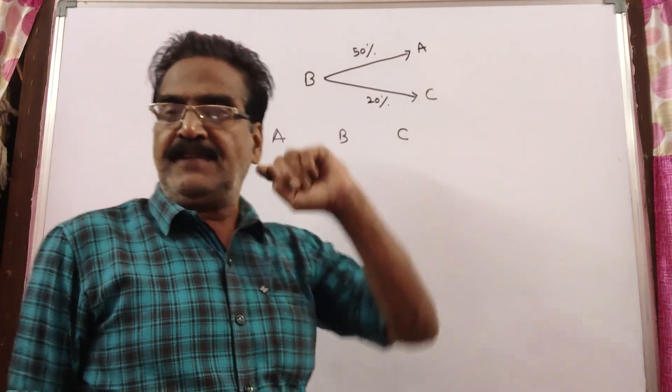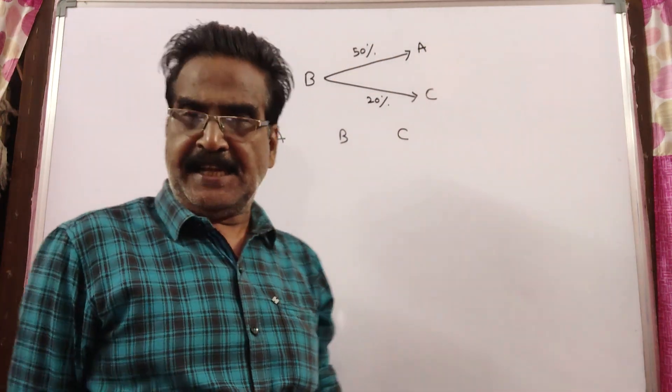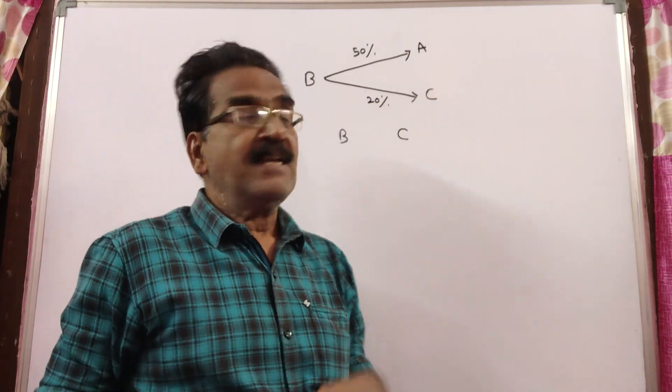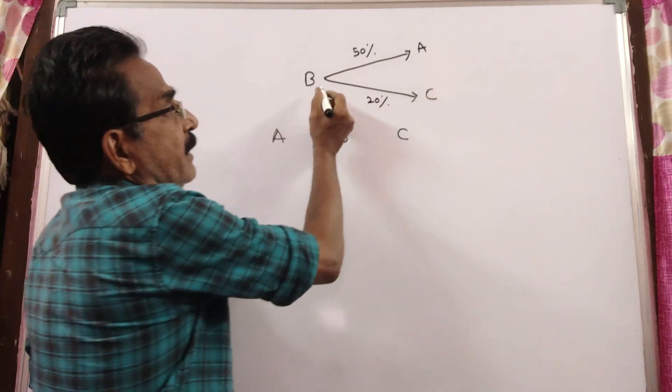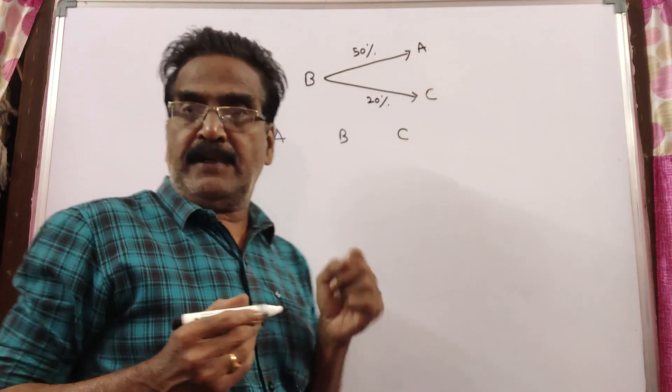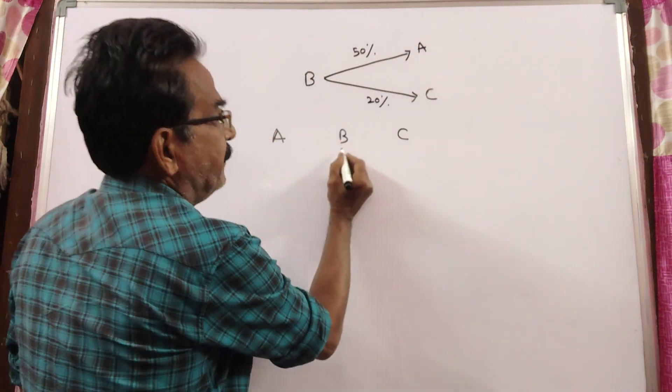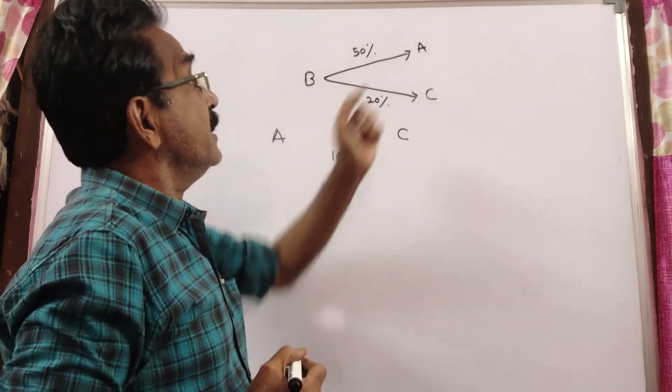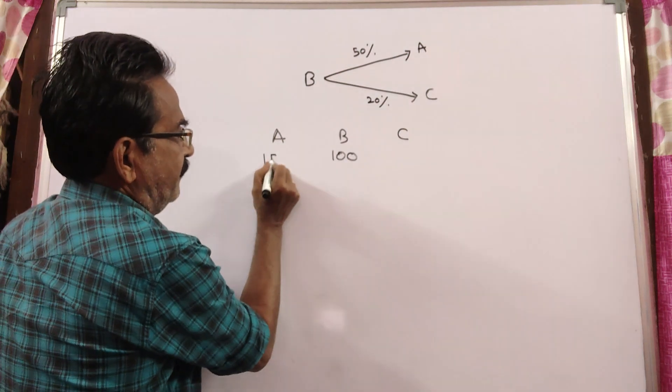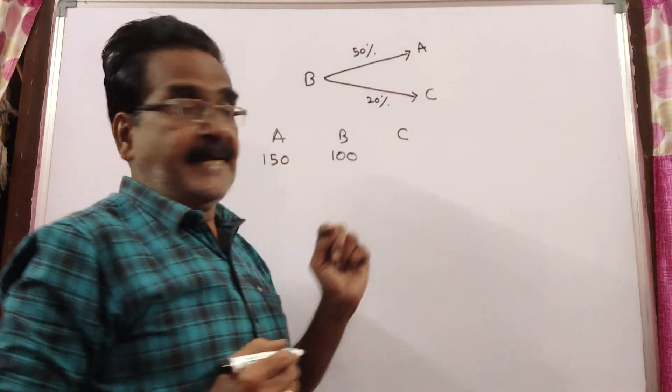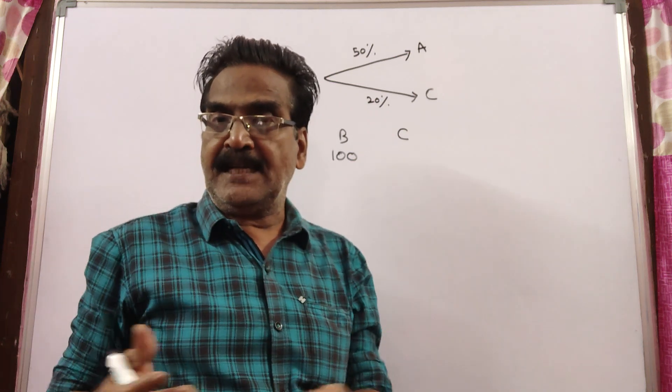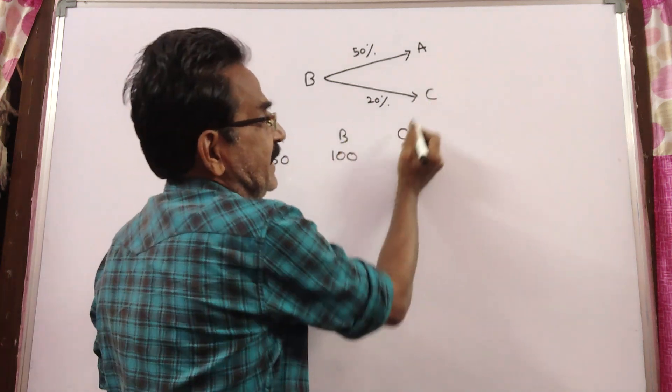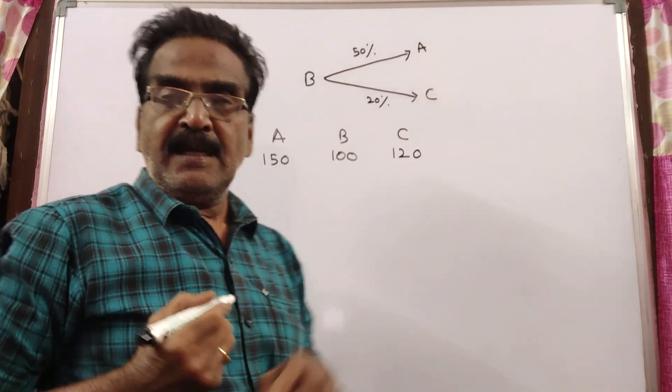Friends, B is 50% more efficient than A and 20% more efficient than C. What does it mean? B is 50% more efficient than A means if B takes 100 days, A takes 150 days. In the same lines, B is 20% more efficient than C means if B takes 100 days, C takes 120 days.